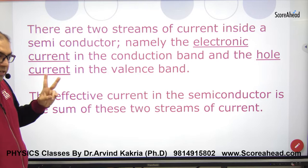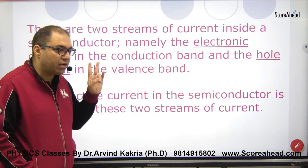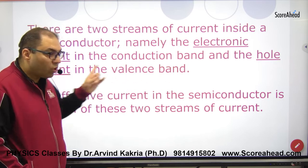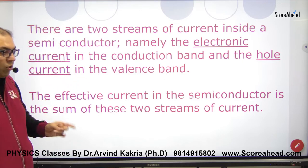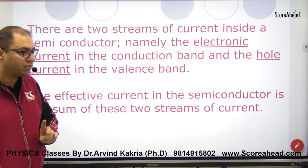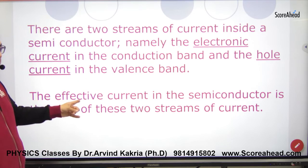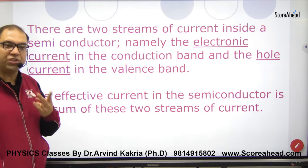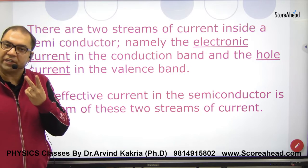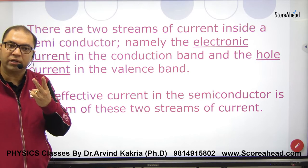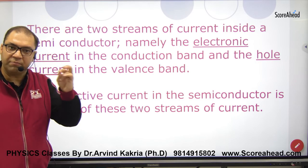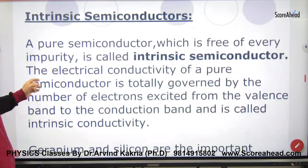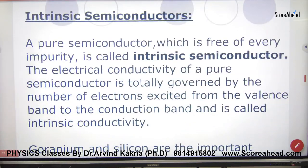There are two streams of current: electronic current and hole current. The effective total current in the semiconductor is the sum of these two streams — electronic current plus hole current.